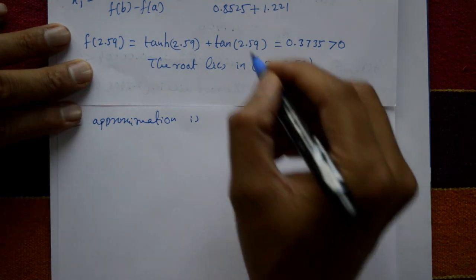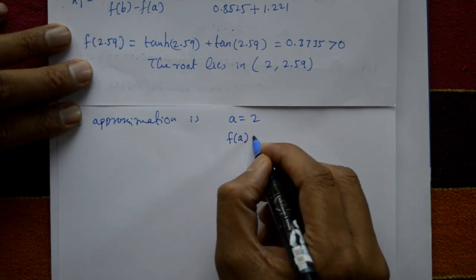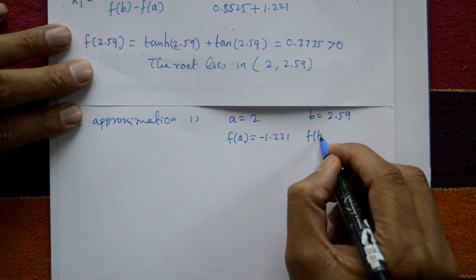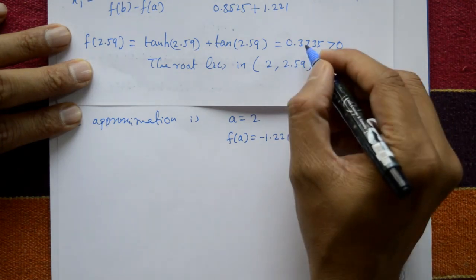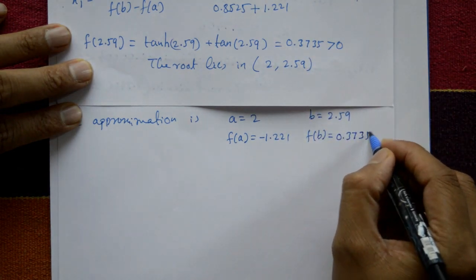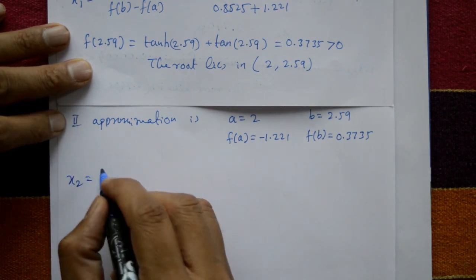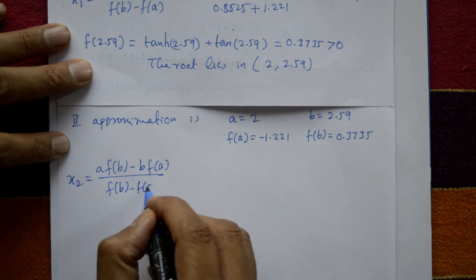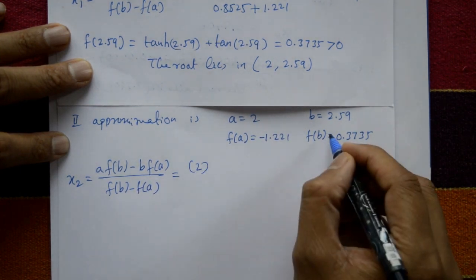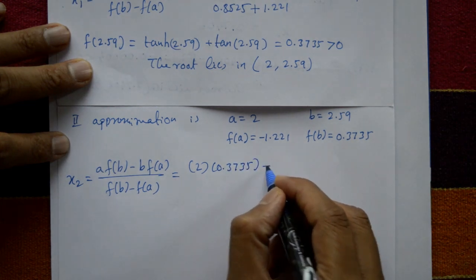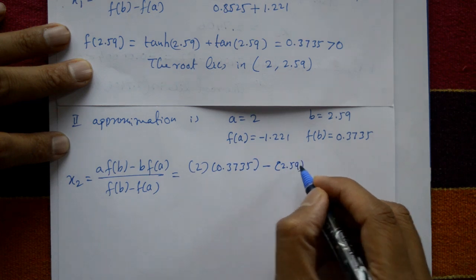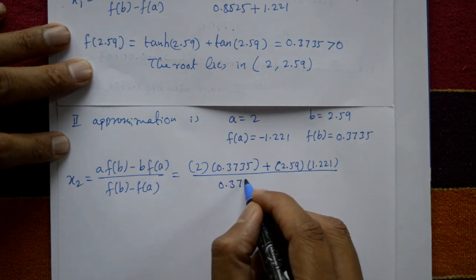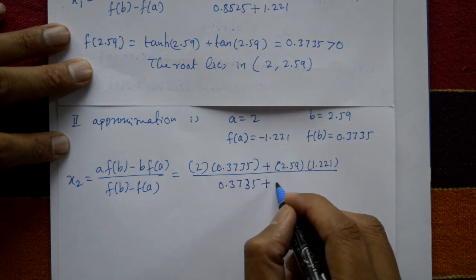For the second approximation: a = 2, f(a) = -1.221 (unchanged). b is updated to 2.59 and f(b) = 0.3735. Apply the same formula: x2 = [a·f(b) - b·f(a)] / [f(b) - f(a)]. Substituting: 2 × 0.3735 - 2.59 × (-1.221), divided by 0.3735 + 1.221.